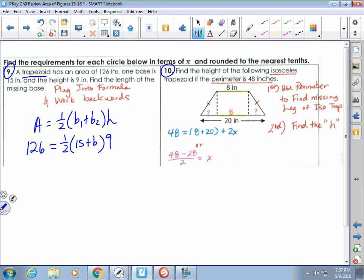So the first thing we would do, because we're taking a half of this expression, let's get rid of that by multiplying by 2. And that would give us 252 is equal to 15 plus B times 9.